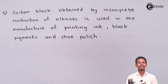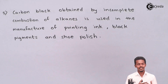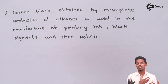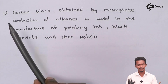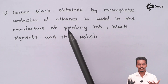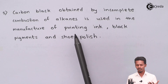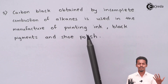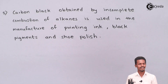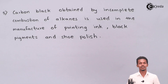In the combustion of alkanes, most alkanes are converted into carbon dioxide and water, releasing heat. However, it is not necessary that all the hydrocarbons undergo complete combustion — some carbon is left unreacted, forming what is known as carbon black, due to incomplete combustion of alkanes. This carbon black is used in manufacturing printing ink and black pigments, and shoe polish is also made from it.